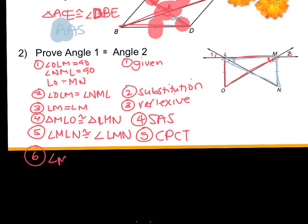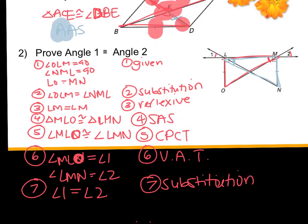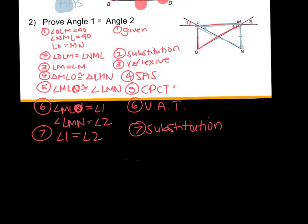Then I have to state that MLN equals angle one and LMN equals angle two, and that's the vertical angle theorem. So if those two are congruent, I've already stated they're congruent, then I can substitute in the congruent angles in their place. That one took a little bit of extra work, but the concept is the same: if I'm trying to prove corresponding parts are congruent, I've got to prove the triangles are congruent, and then I can state the corresponding parts are congruent — CPCTC.